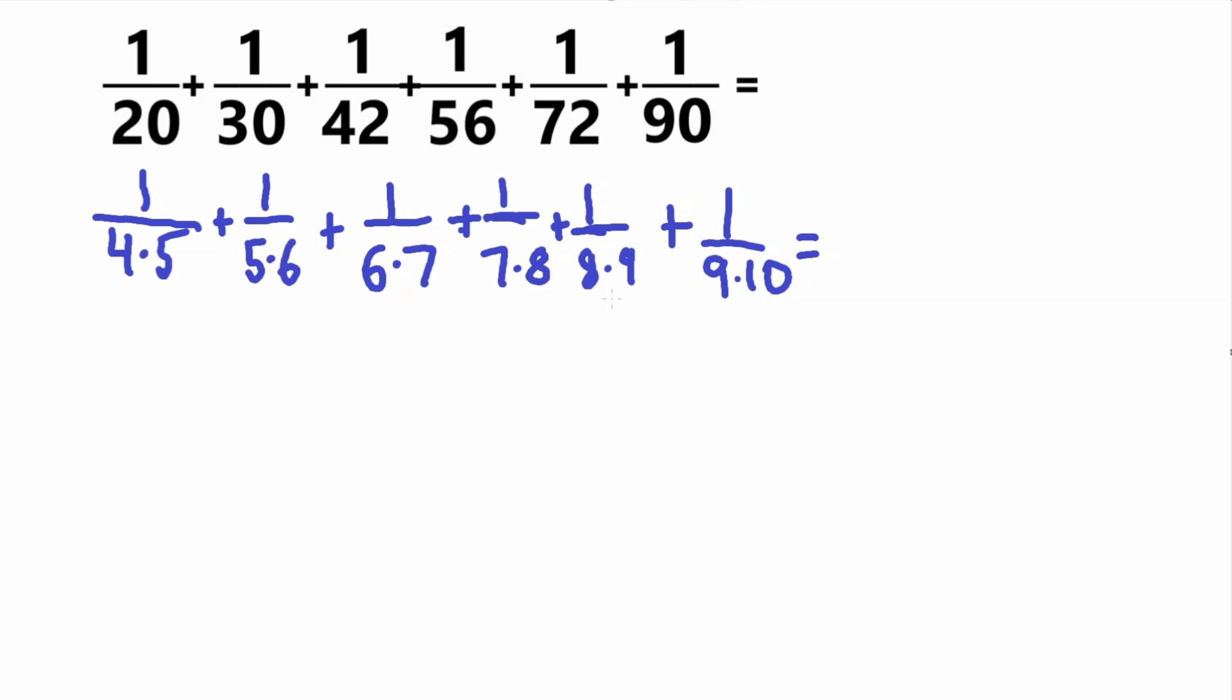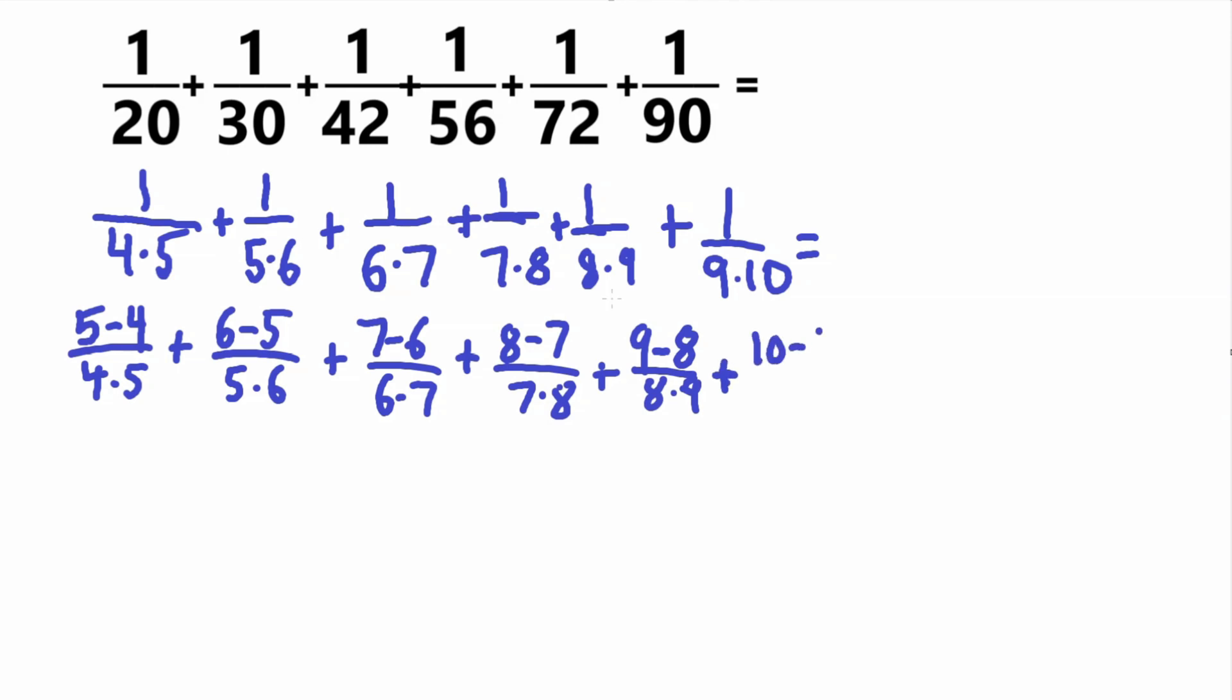So for example, our 1 here we'll rewrite as 5 minus 4 over 4 times 5. Here will be 6 minus 5 over 5 times 6, here will be 7 minus 6 over 6 times 7. 8 minus 7 over 7 times 8, 9 minus 8 over 8 times 9, and then finally 10 minus 9 over 9 times 10.